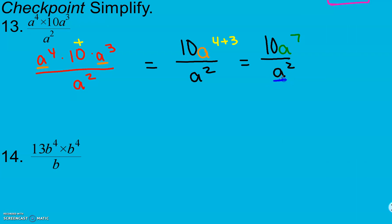But I've simplified my numerator. Now, I am dividing powers with the same base, which means I can keep my base, and I can subtract those exponents. So, 7 minus 2 is going to give me a to the fifth. Keep in mind, I still have that 10 I didn't change at all. So, it's 10a to the fifth.